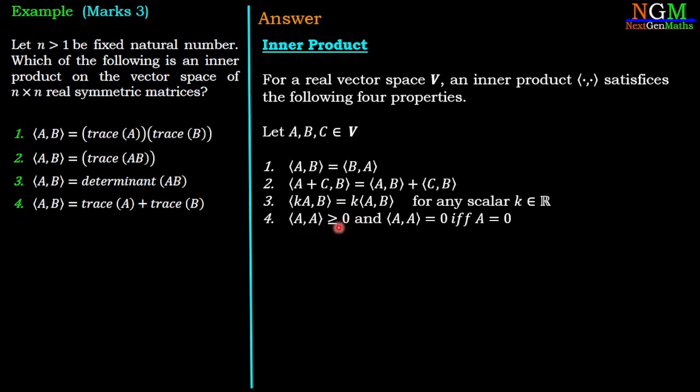And the fourth property: ⟨A,A⟩ ≥ 0, and ⟨A,A⟩ = 0 if and only if A = 0. So any operation which satisfies these four conditions will be an inner product. If one of the conditions is violated, then it will not be an inner product on the vector space.